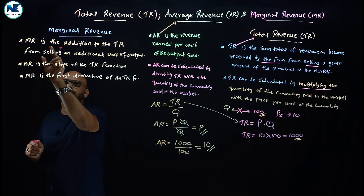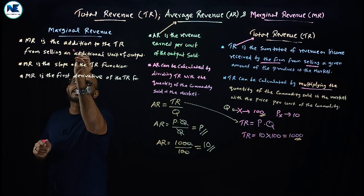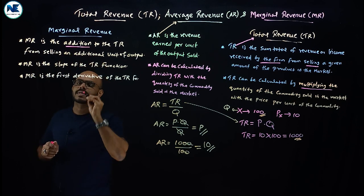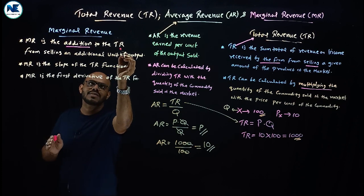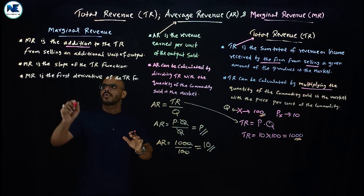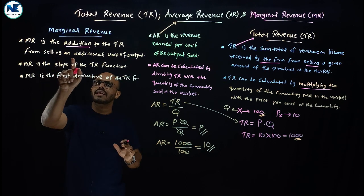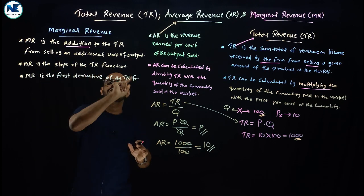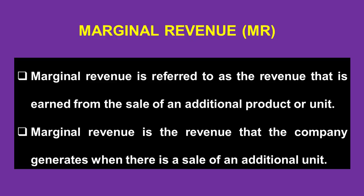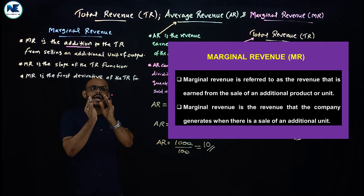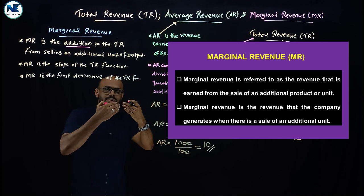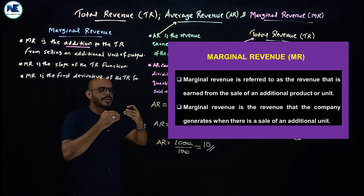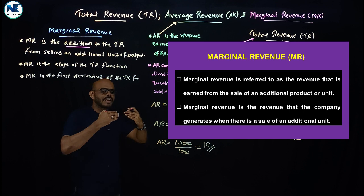Marginal revenue is the addition to the total revenue — TR means total revenue — from selling an additional unit of output. Marginal revenue is the net addition to total revenue when the firm is selling an extra unit of output.